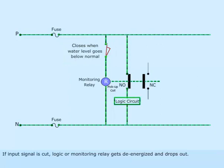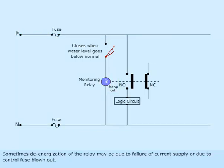If input signal is cut, logic or monitoring relay gets de-energized and drops out. Sometimes, de-energization of the relay may be due to failure of current supply or due to control fuse blown out.